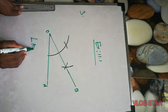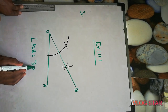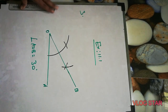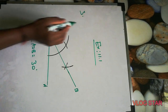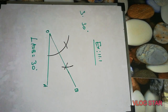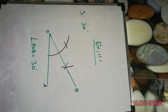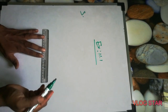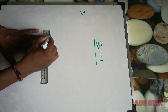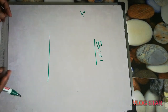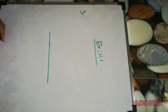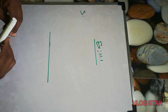So angle A will be equal to 30 degrees. The second part of question number three is 22 and a half degrees. So we'll draw a line, and 22 and a half degrees means we have to make first 90 degrees, like we did before.